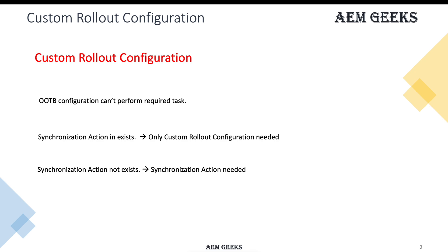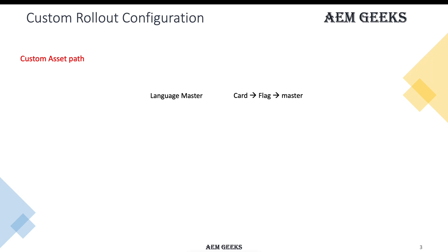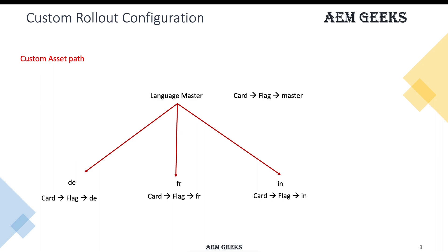In this tutorial we'll cover the first scenario, and in a coming tutorial we'll see how to create a custom rollout synchronization action as well. The scenario is: in my language master I have a component called 'card' where I display the flag of a country. I used a generic image in that component, but when I roll out that page to a country-specific site, the flag should display per country. However, the same image from language master is displayed in the live copy.